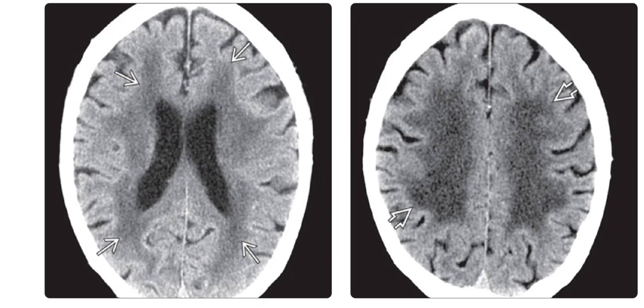The left image is the axial non-contrast CT scan and it shows diffuse atrophy and extensive confluent periventricular and subcortical hypodensities which are typical for severe arteriolosclerosis in this elderly patient with dementia. The right is the axial CT scan at the level of the corona radiata and it shows extensive involvement of the white matter by arteriolosclerosis.